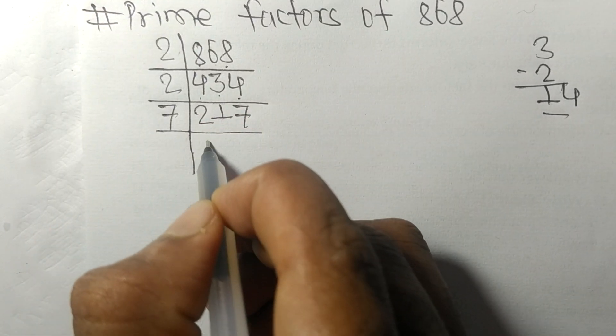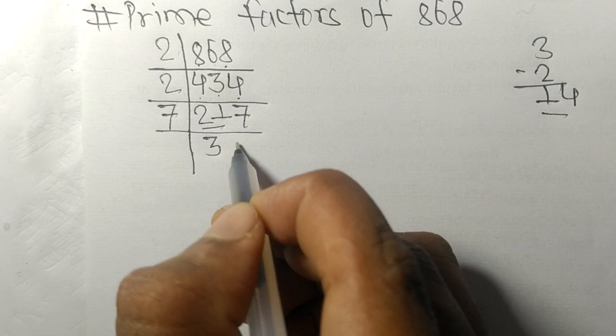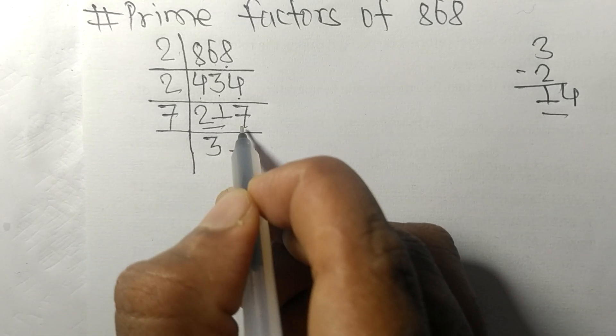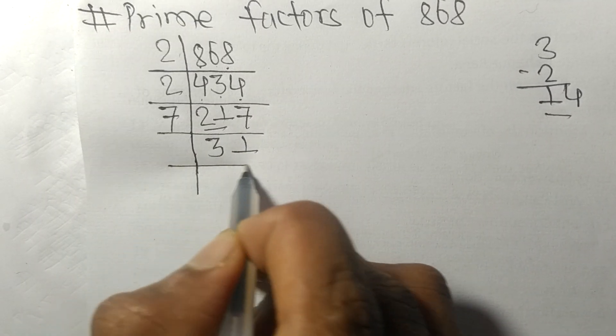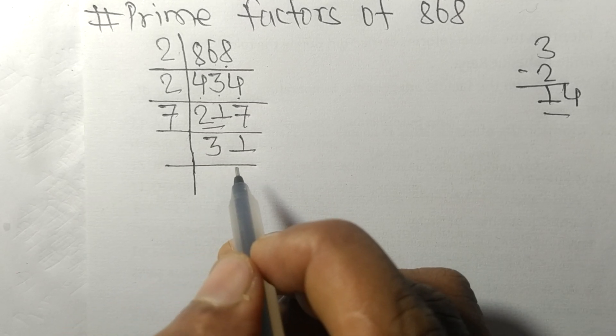So 7 times 3 means 21. 7 times 1 means 7. So now we got 31 which is a prime number.